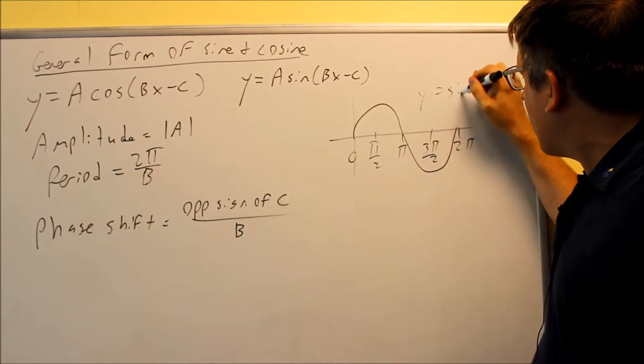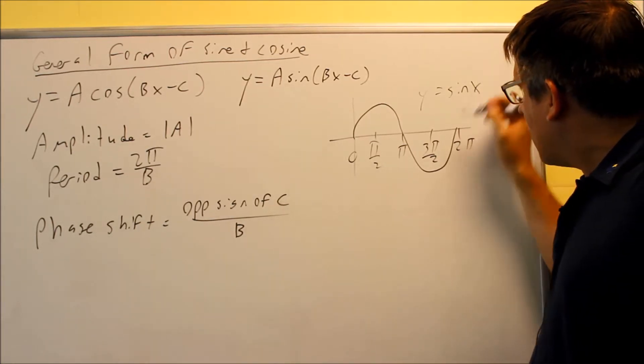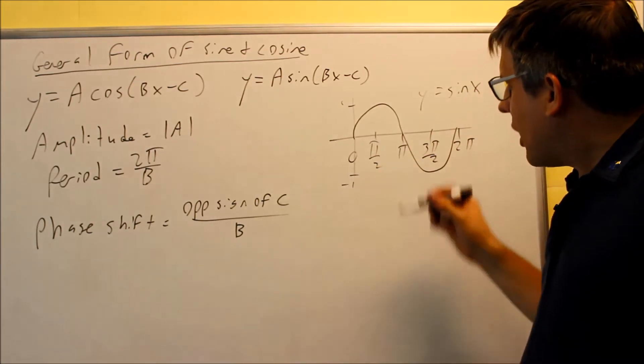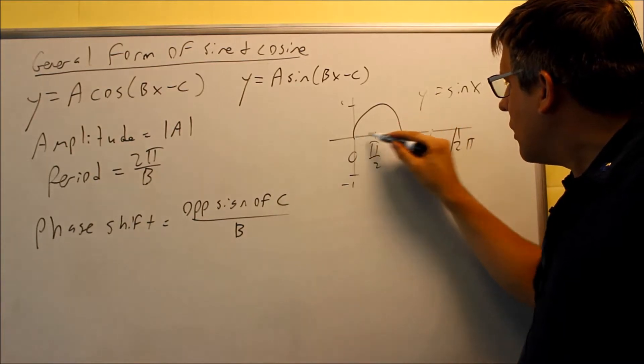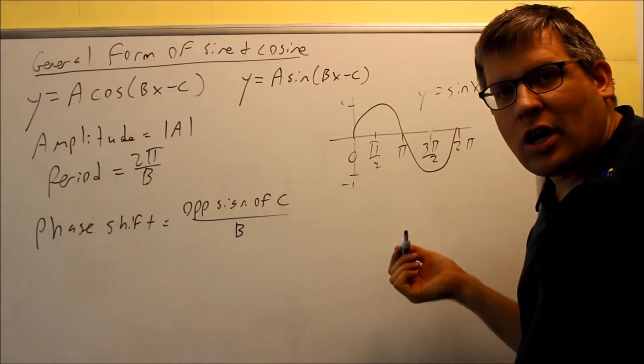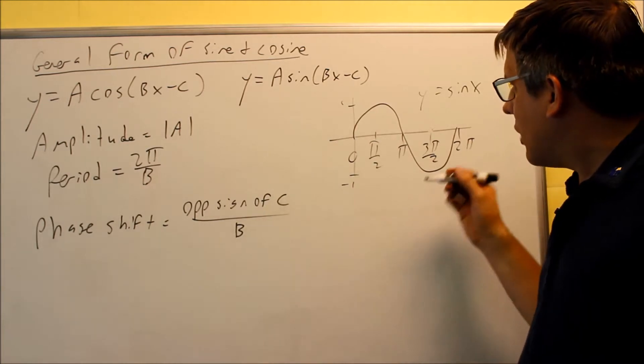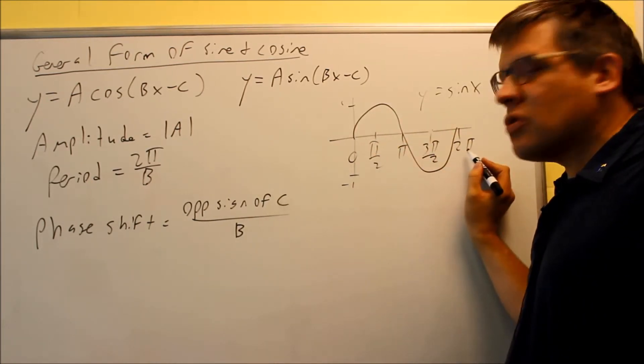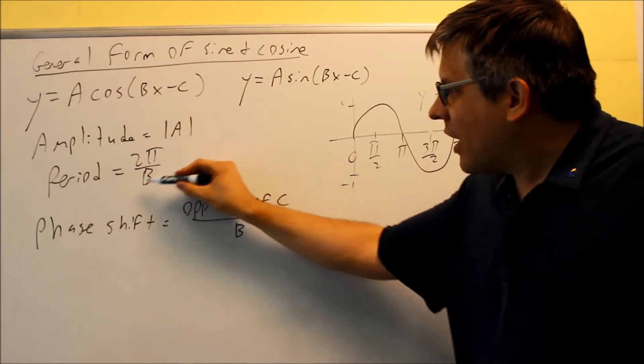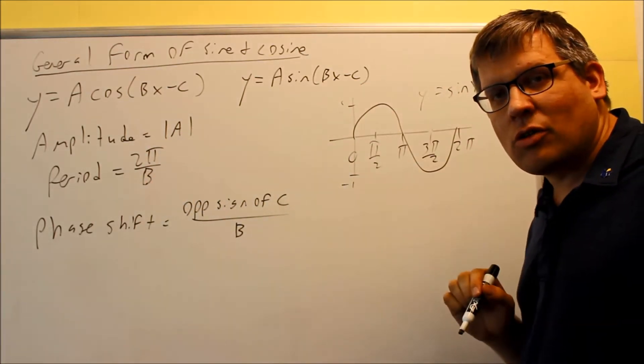If I have y equals sine x, so I don't have any number in front of the sine or in front of the x here, that's what the normal one looks like. This goes up to 1 and down to negative 1. So my amplitude would have been 1 because that's how high it is from the x-axis, and I could have done that by taking the absolute value of 1 that's in front of the sine. There's a 1 in front of the x, so your period is always going to be between 0 and 2π. Now if that number gets changed to something else, then that affects my period because now I'm taking my 2π and dividing by whatever number is in front of the B.